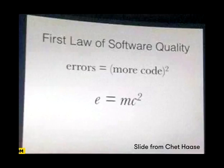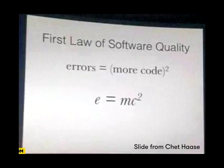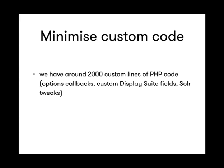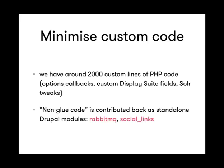The more code you write, the more errors you get — times two. So we try to limit our custom code all the time. We're using Drupal and contributed modules, so there's no point writing a lot of custom code. We've actually gone through our codebase and we have around 2,000 custom PHP lines powering rednoseday.com right now. These are mostly what we call 'glue code.' All the non-glue code, we package up and contribute back in the form of a module — we've contributed two modules for this project: RabbitMQ and SocialLinks.